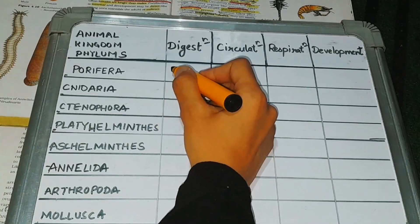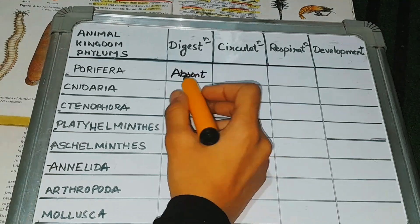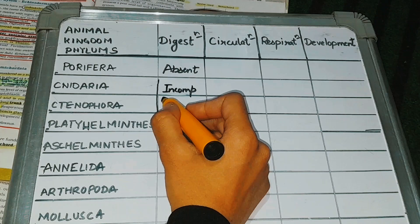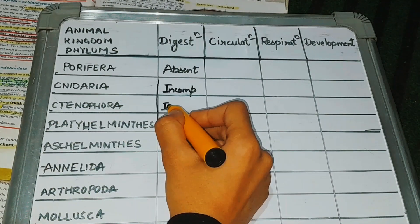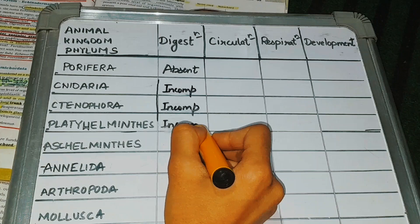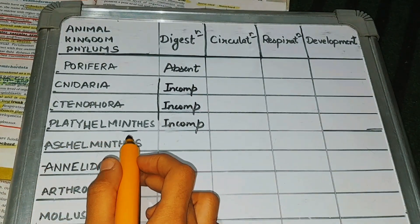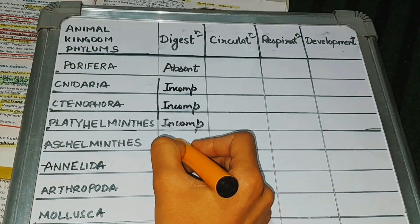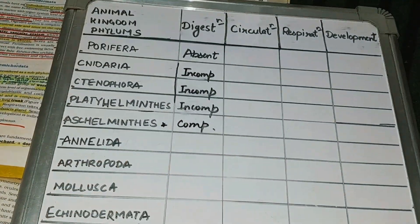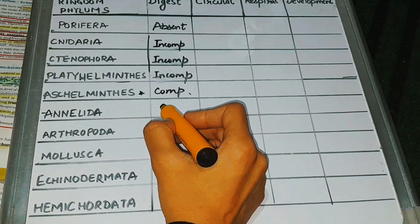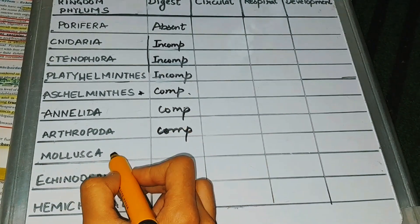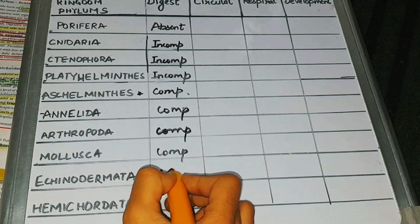First topic is on the basis of digestion. In Porifera, digestion is absent. In Nideria, digestion is incomplete. In Tenophora, also incomplete. In Platyhelminthus, also incomplete. Now from Ascalminthus, complete digestion is going to start — we will star-mark it. After Ascalminthus, all the other phylums like Annelida, Arthropoda, Mollusca, Echinodermata, and Hemicordata will have complete digestion.